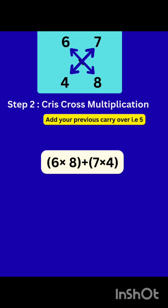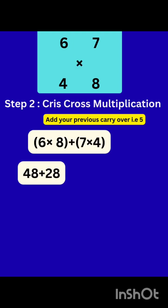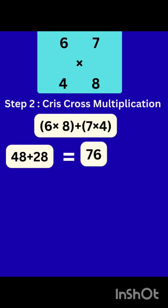That means multiply 6 times 8 plus 7 times 4. That becomes 48 plus 28. That will be equal to 76.